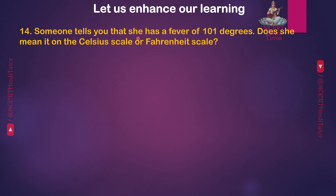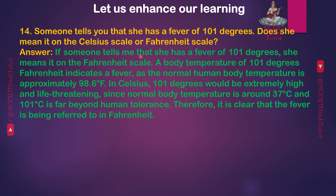Question 14: Someone tells you that she has a fever of 101 degrees. Does she mean it on the Celsius scale or Fahrenheit scale? Answer: She means it on the Fahrenheit scale. A body temperature of 101 degrees Fahrenheit indicates a fever, as the normal human body temperature is approximately 98.6 degrees Fahrenheit. In Celsius, 101 degrees would be extremely high and life-threatening since normal body temperature is around 37 degrees Celsius and 101 degrees Celsius is far beyond human tolerance. Therefore, the fever is clearly being referred to in Fahrenheit.